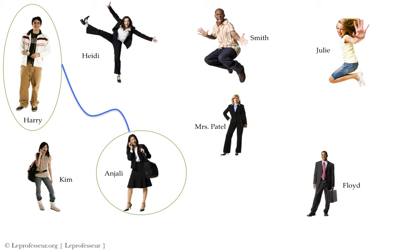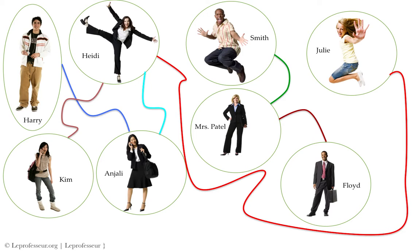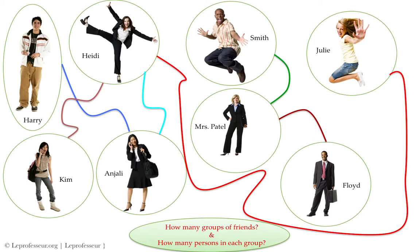So essentially you want to invite some friends and their friends, and figure out how many groups you can make where people in one group know each other and people in different groups have no link. For example: Harry knows Anjali, Anjali knows Heidi and Kim, Heidi knows Julia, Mrs. Patel knows Smith and Floyd. We want to know how many groups of friends exist and how many people are in each group.